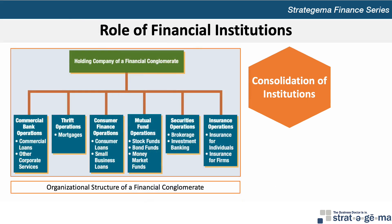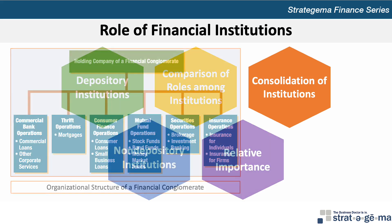This diagram depicts the typical organizational structure of a finance conglomerate, which seeks to diversify both risk and revenue streams across different sectors including commercial banking, thrift, consumer finance, mutual funds, securities, and insurance operations.